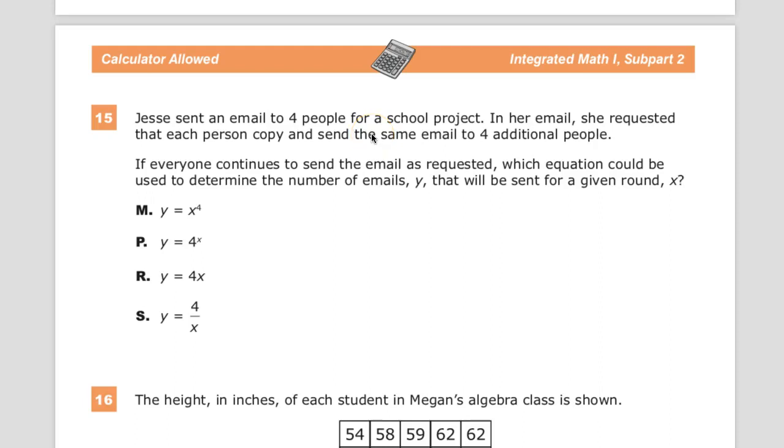Hey everyone, this is the Integrated Math 1 practice test, question number 15. The question says Jesse sent an email to four people for a school project. In her email, she requested that each person copy and send that email to an additional four people.